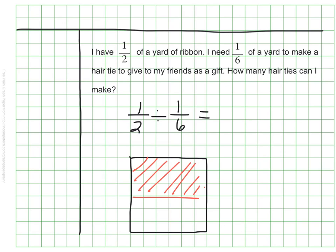If I cut it again in the same direction, but this time in sixths, I'll be able to see how many sixths there are in this half. And I see there's 1, 2, 3 sixths. So 1 half divided by 1 sixth is 3.